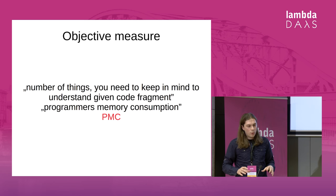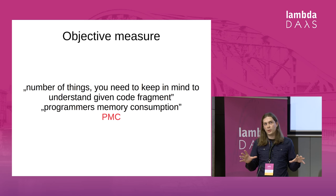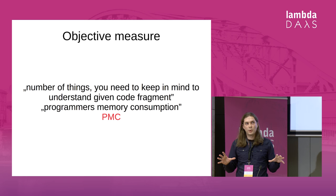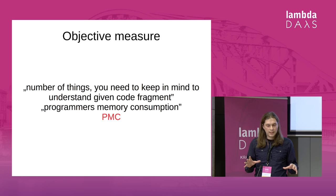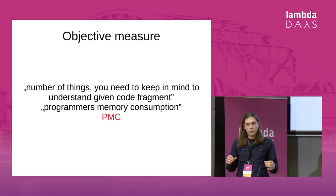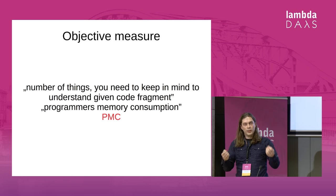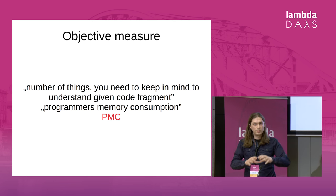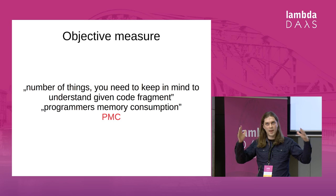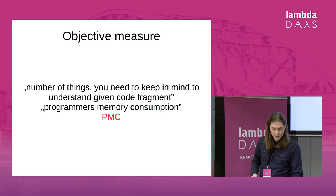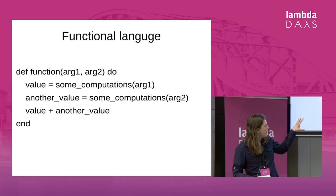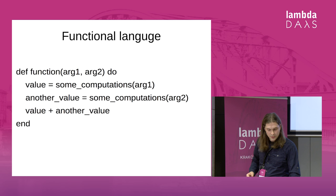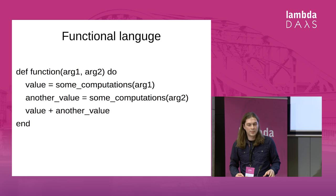So we need an objective measure to compare two things, and I will be comparing Elm and Elixir. What I want to use is the number of things you need to keep in mind to understand a given code fragment — or programmer's memory consumption, PMC for short. Just bear with me on this definition; I'll use it a couple of times.